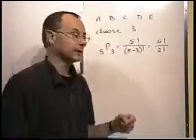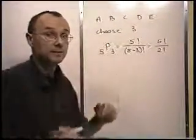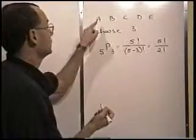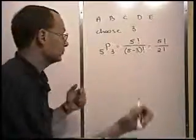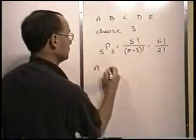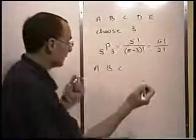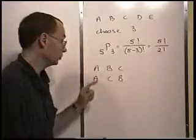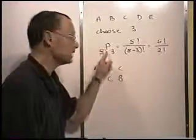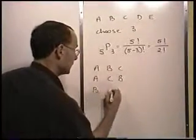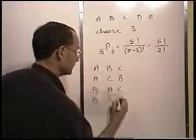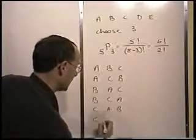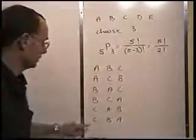Now since order matters, let me just list some of these permutations. Suppose the three that I've happened to be looking at that got selected were the A, the B, and the C. Some of our answers are going to look like this: one permutation would be ABC. Another permutation is going to be ACB, because order is important here. Another one would be BAC, or BCA. And another permutation here is CAB, and the last one that uses these three letters is CBA.